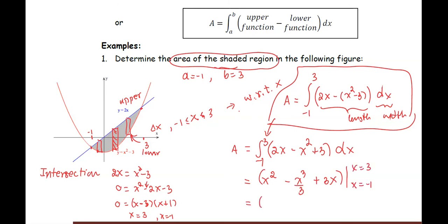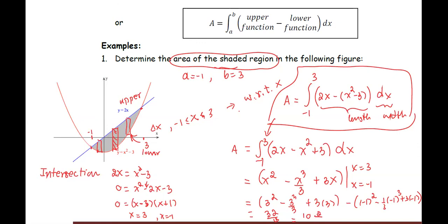Same routine — substitute the upper limit first: plug in 3, then subtract by plugging in the lower limit, negative 1. Make sure to put parentheses around the lower limit substitution because of the negative sign: negative one-third times negative 1 cubed plus 3 times negative 1. The result is 32 over 3, or 10 and two-thirds, as the value for the area between these two curves.